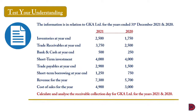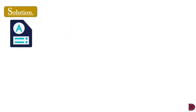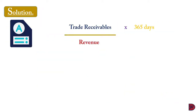Let's test our understanding. This information relates to GKE Limited for the years ended 31st December 2021 and 2020. The data includes inventories, trade receivables, bank and cash, short-term investment, trade payables, short-term borrowing, revenue, and cost of sales. We have to calculate and analyze the receivable collection days for GKE Limited for both years. In the solution, we restate the formula: trade receivables divided by revenue, multiplied by 365 days.